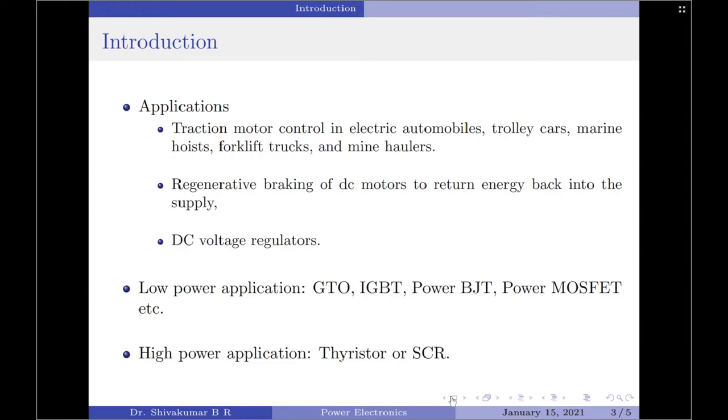Depending upon whether the application is a low power application or a high power application, you can use different types of chopper switches. For example, for low power application, you can use a GTO, IGBT, Power BJT or a power MOSFET as chopper switch. On the other hand, for high power applications, you can use either a thyristor or an SCR.